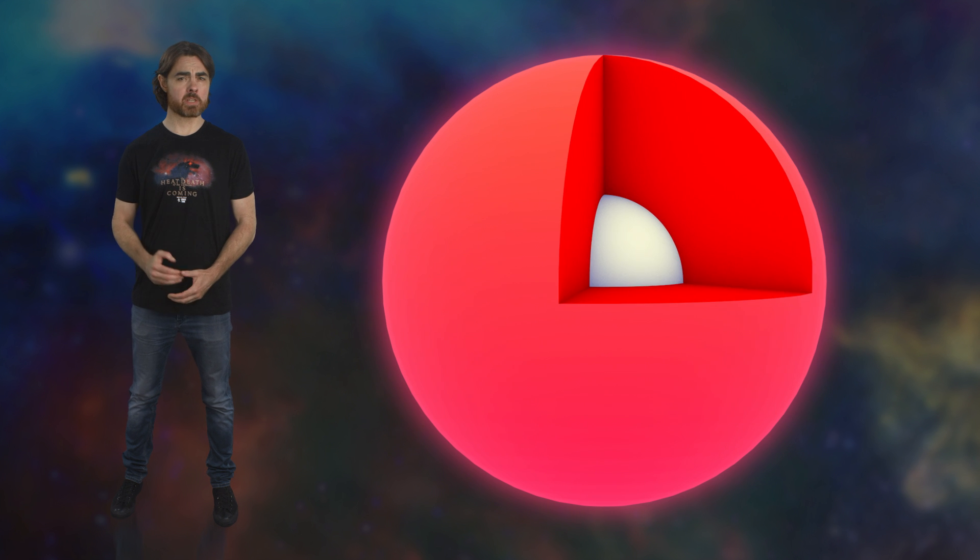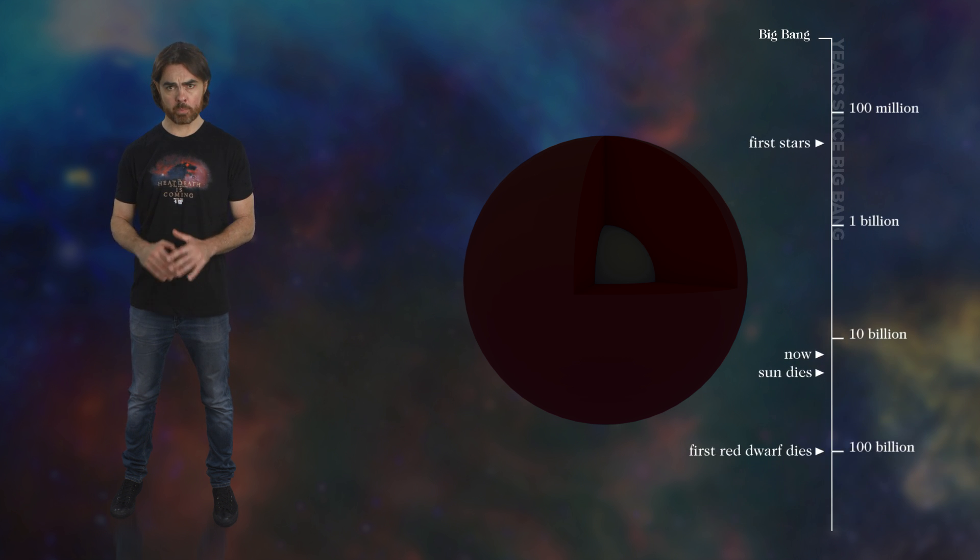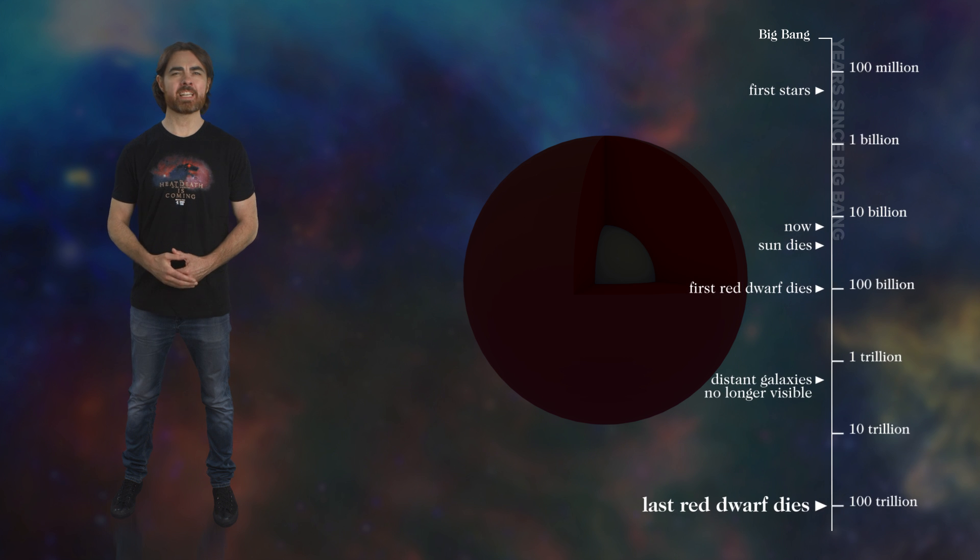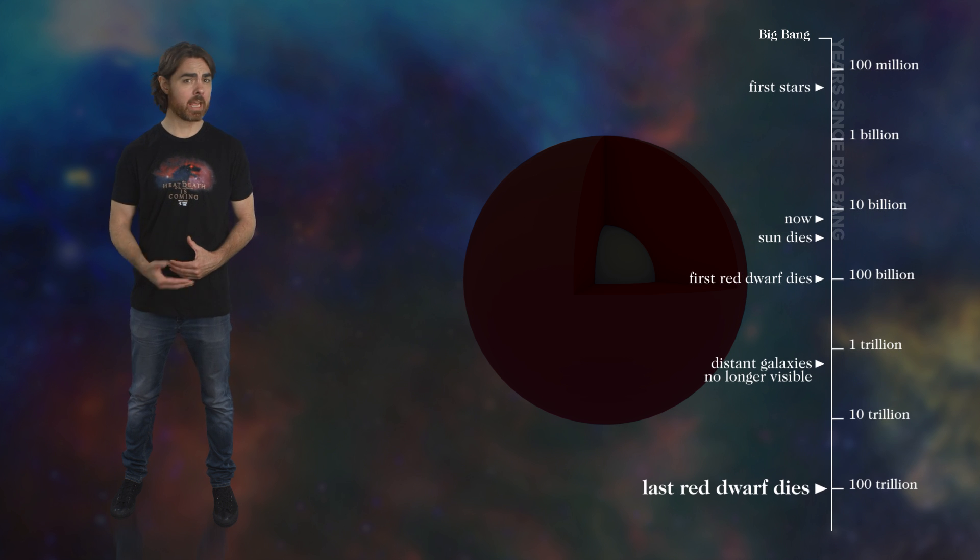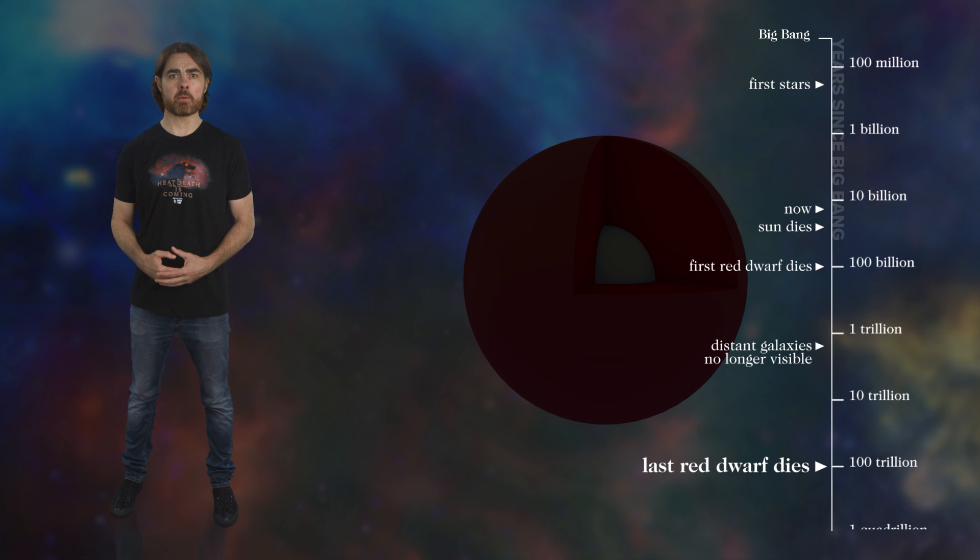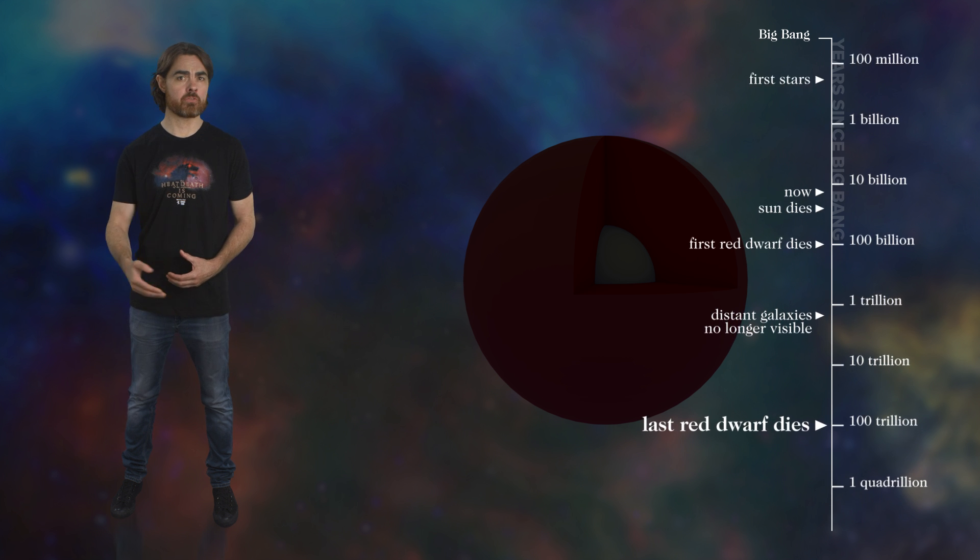In 100 trillion years, the last star in the universe will expend the final atoms of hydrogen fuel and settle quietly into a dim white dwarf, before slowly fading to black as it radiates away its remaining heat. The era of stars will be over. That 100 trillion years is 10,000 times the current age of the universe, and so the days of starlight and warmth have a way to go. But even when they are done, the universe will be young in comparison to the long dark ages to follow.